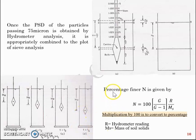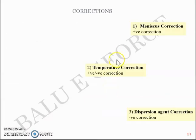Now there are three corrections included in the hydrometer analysis: meniscus correction, temperature correction, and dispersion agent correction.